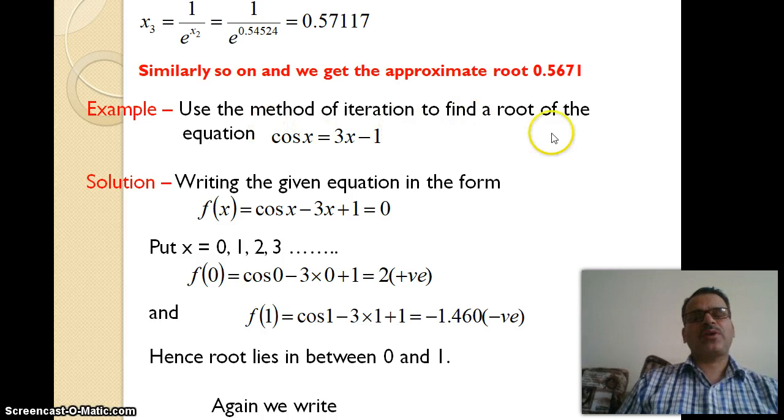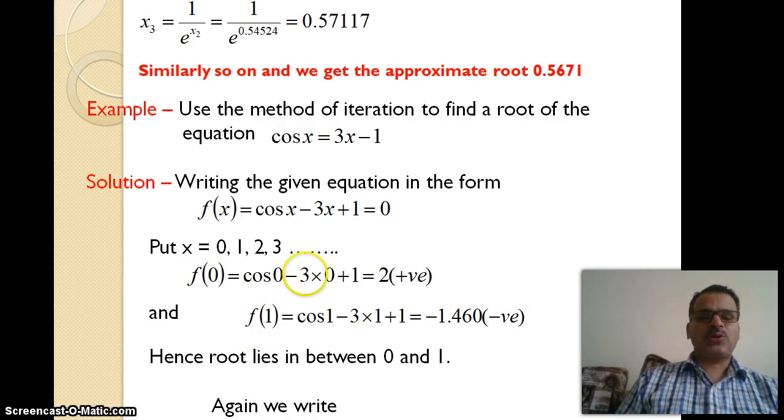Example: Use the method of iteration to find a root of the equation cos x = 3x - 1. Writing the given equation in the form f(x) = cos x - 3x + 1 = 0. First, we need to find the interval where roots lie. We put x = 0: f(0) = cos 0 - 3(0) + 1 = 2, which is positive. And f(1) = cos 1 - 3(1) + 1 = -1.460, which is negative. Hence the root lies between 0 and 1.